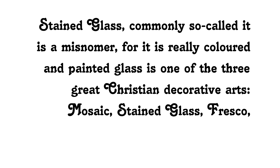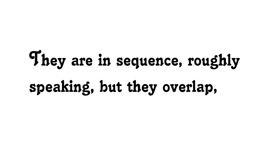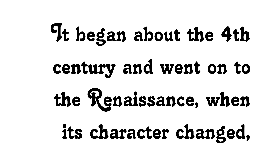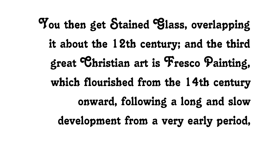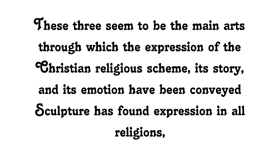Stained glass — commonly so-called; it is a misnomer, for it is really coloured and painted glass — is one of the three great Christian decorative arts: mosaic, stained glass, frescoes. They are in sequence, roughly speaking, but they overlap. First mosaic in the earlier ten centuries, beginning about the fourth century and going on to the Renaissance when its character changed. You then get stained glass overlapping it about the twelfth century, and the third great Christian art, fresco painting, which flourished from the fourteenth century onward. These three seem to be the main arts through which the expression of the Christian religious scheme, its story and its emotion, have been conveyed.